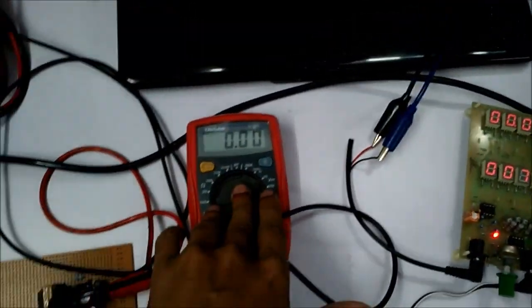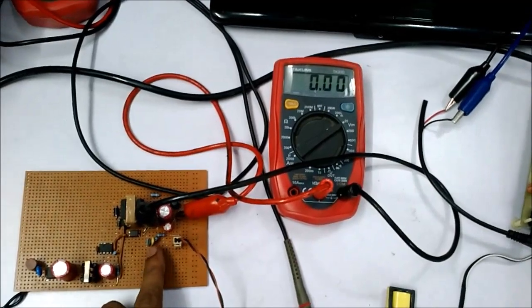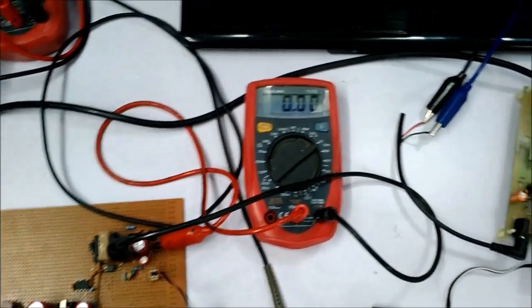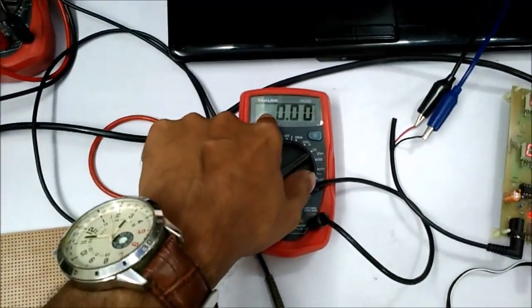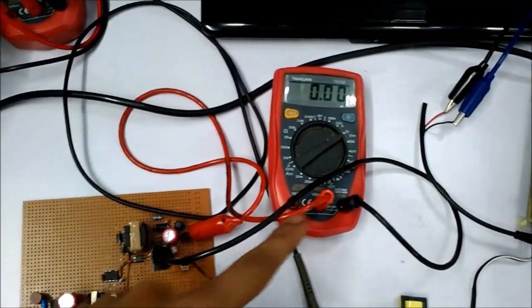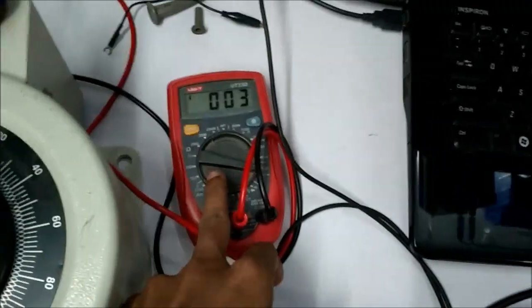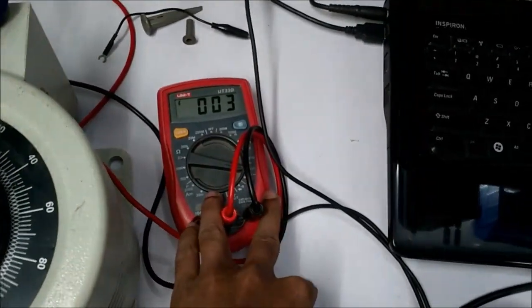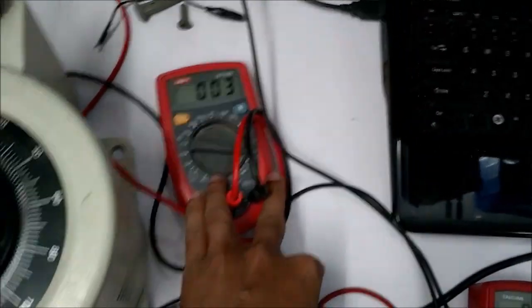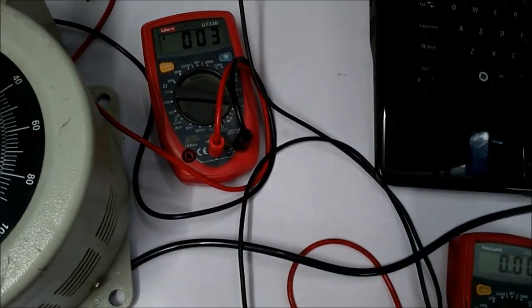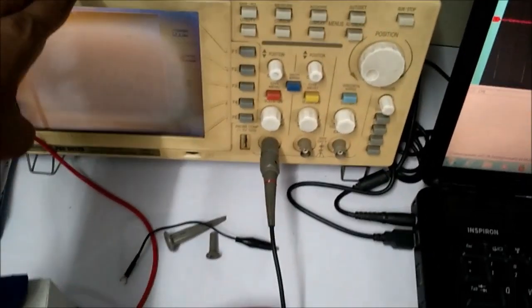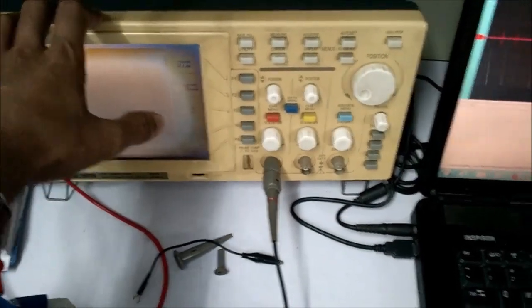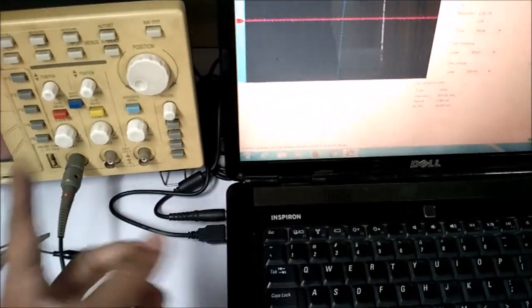So here is the first multimeter which is connected across the output of the SMPS. It is showing DC voltage of the power supply, 5 volt 2 ampere. Here is another multimeter which is connected across the variac. So it will provide me detailed information about how much AC voltage is getting into the SMPS. Here is my oscilloscope that got damaged. I have connected my laptop so it will show the output from the oscilloscope.